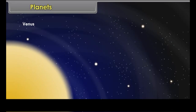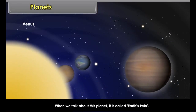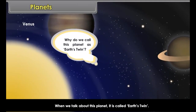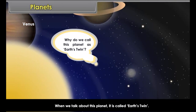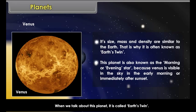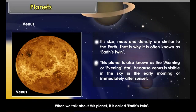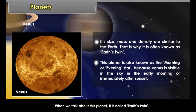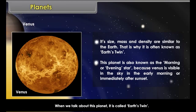Venus is called Earth's twin because its size, mass and density are similar to the Earth. This planet is also known as the morning or evening star because Venus is visible in the sky in the early morning or immediately after sunset.